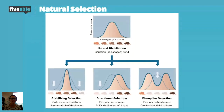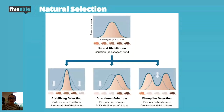Next are directional and disruptive selection — my students always mix these up because they both start with 'D.' But if you listen to what the word is saying: directional moves in one direction, towards one extreme phenotype. The classic example is peppered moths. One extreme phenotype is favored — not the middle phenotype, which is stabilizing. In this mouse example, directional selection pushes toward darker mice, perhaps because heavy rains make the ground muddy and dark mice blend in better.